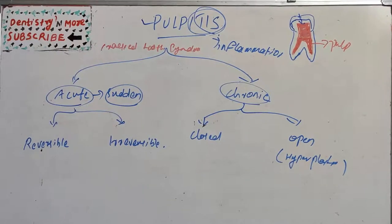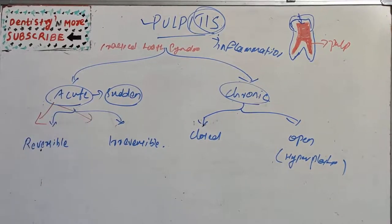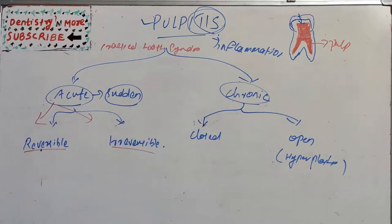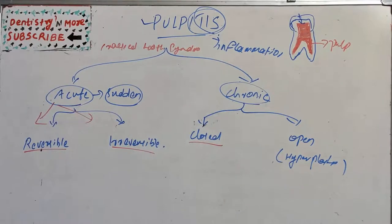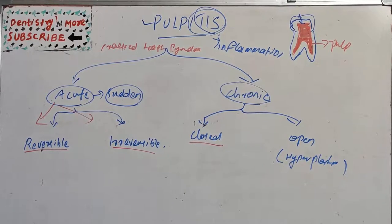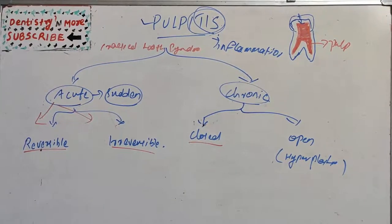There are two main types: acute pulpitis, which can be divided into reversible and irreversible, and chronic pulpitis, which can be closed or open. The open chronic type is also known as hyperplastic pulpitis. We'll start with acute reversible pulpitis.